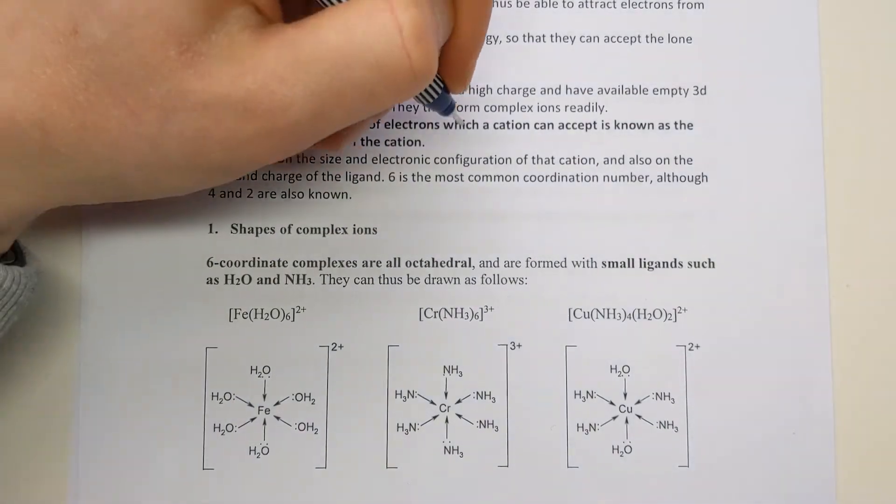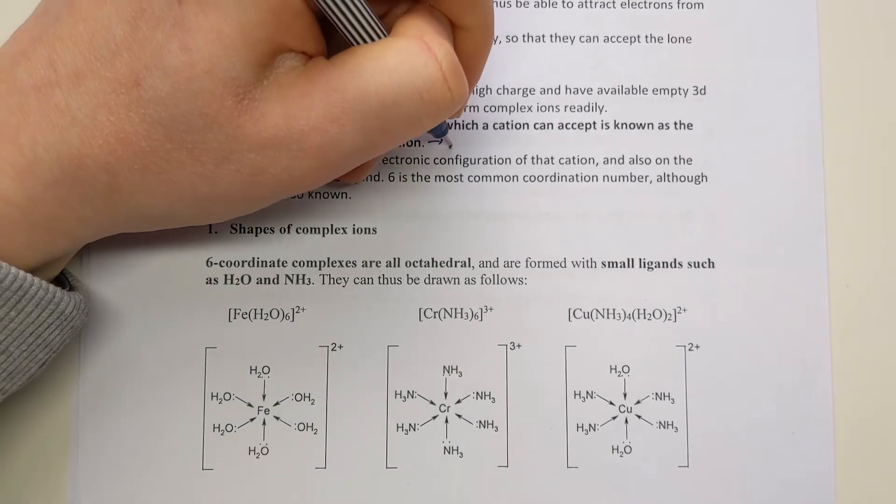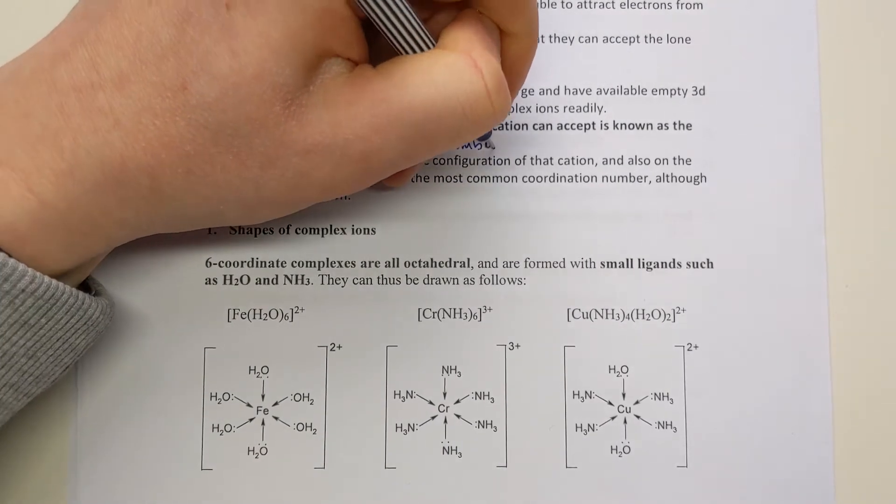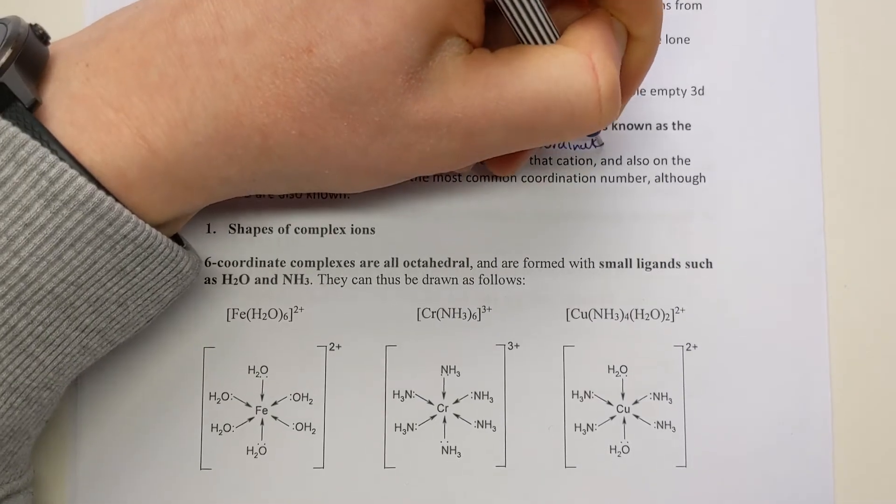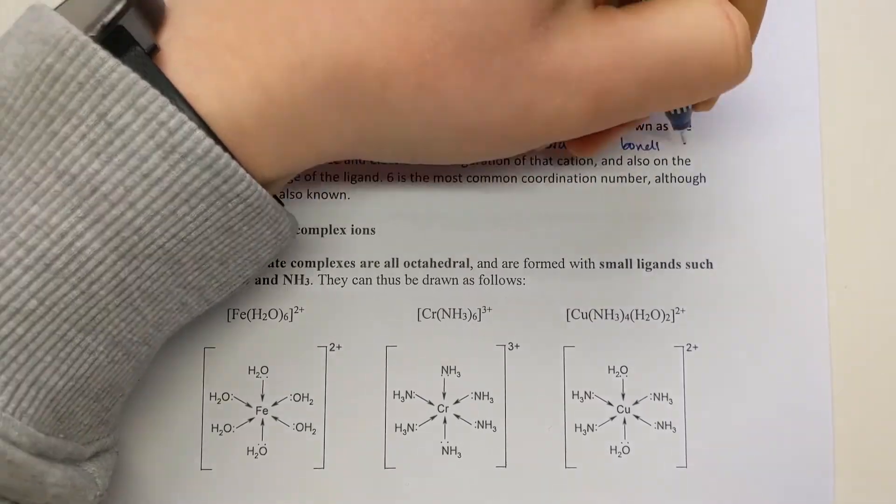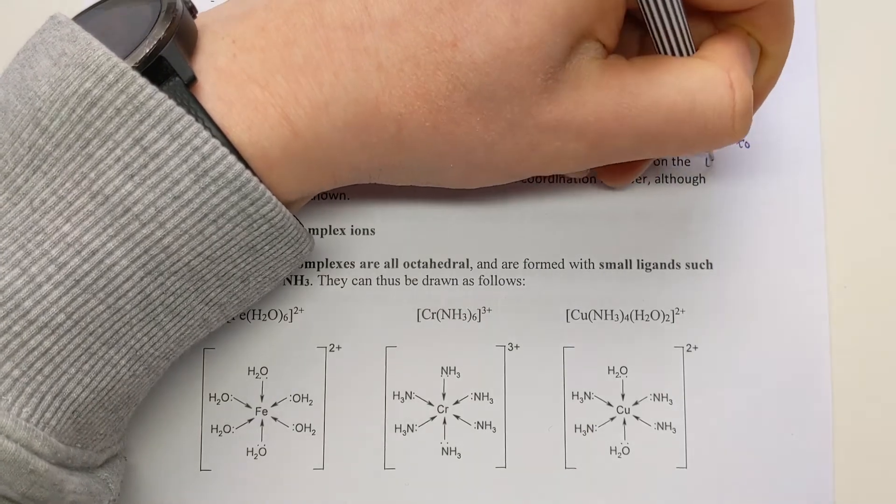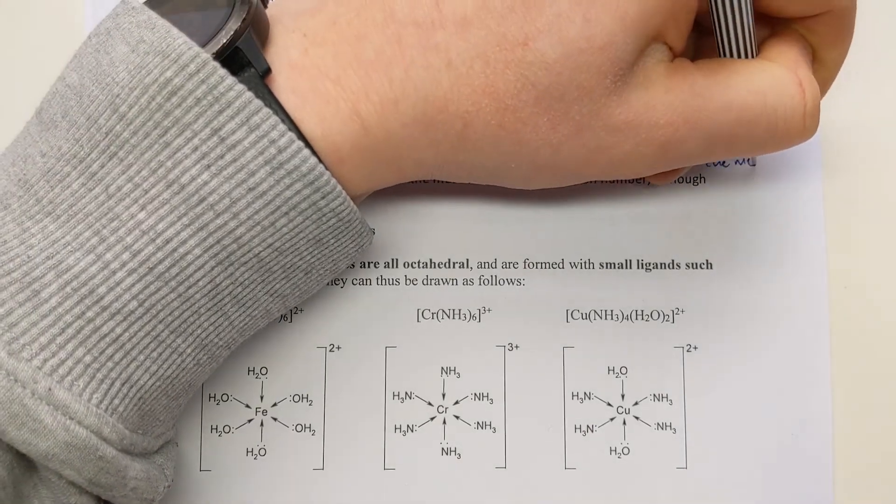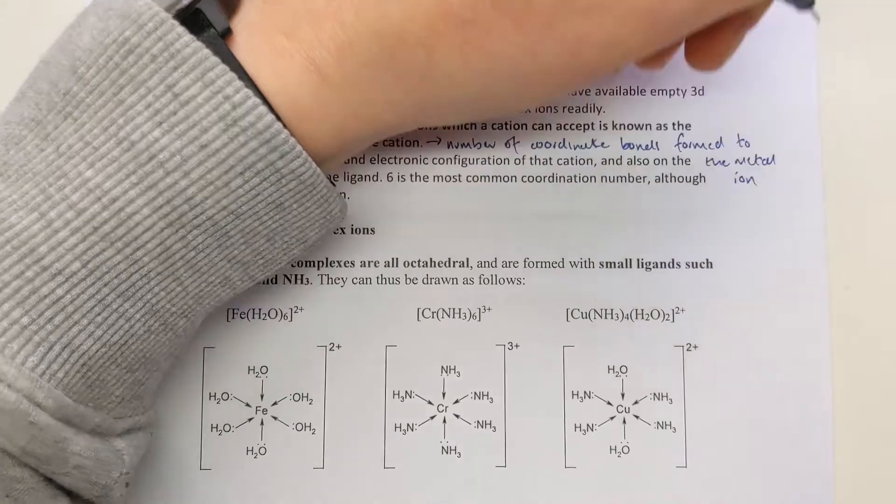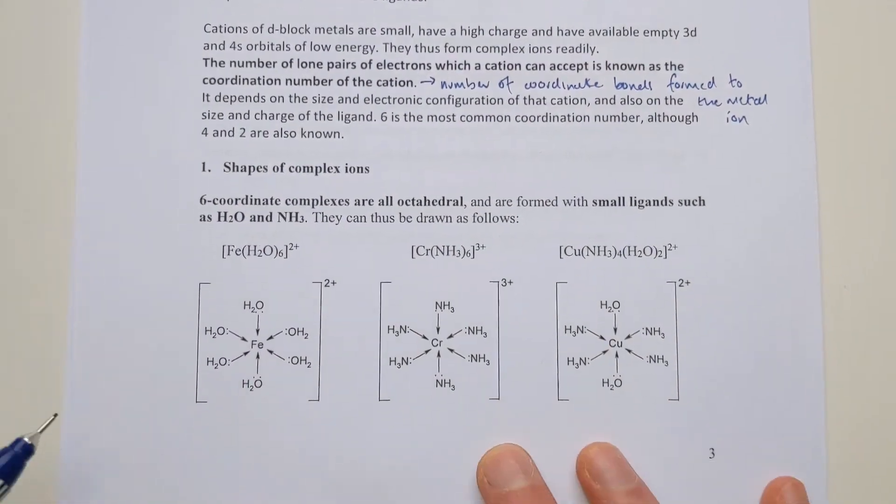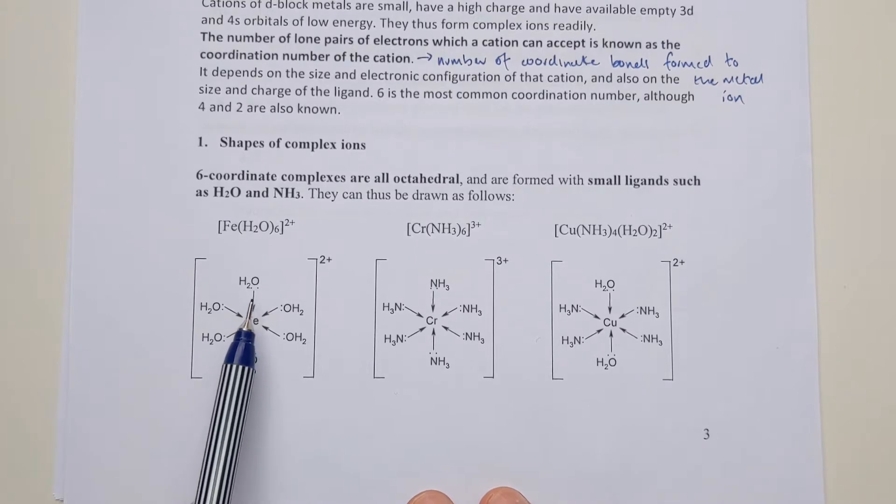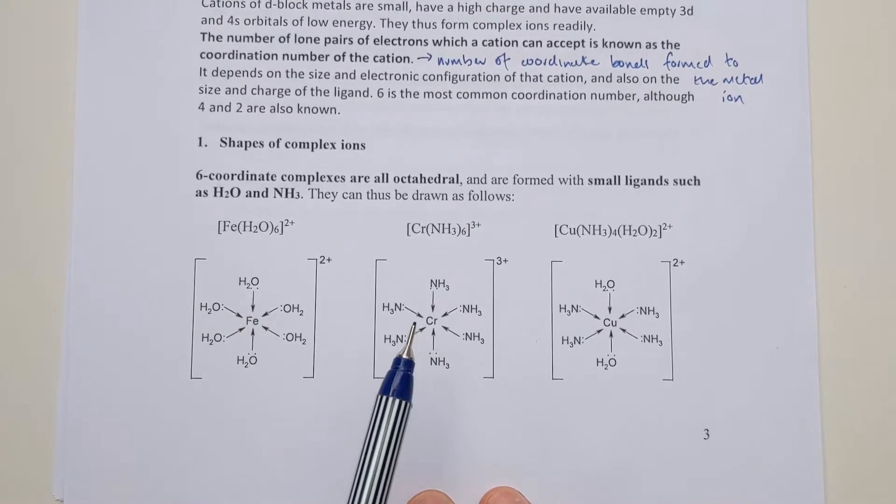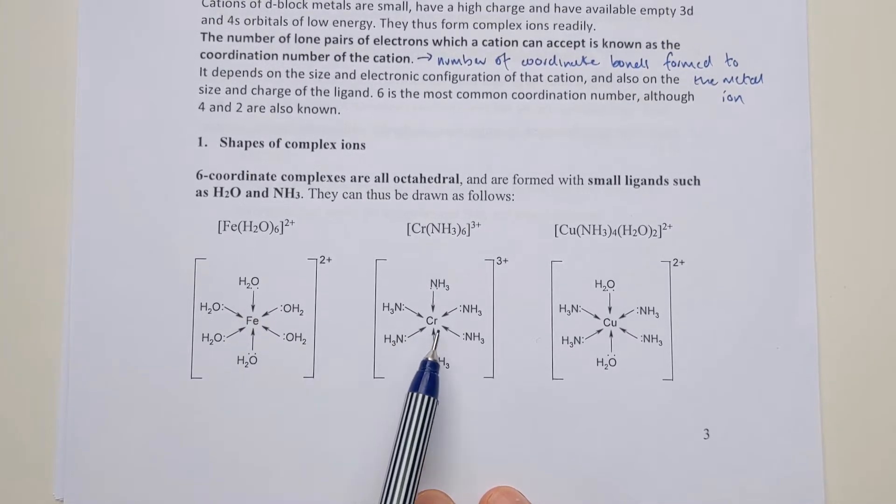Another way of putting that more simply is just that the number of coordinate bonds you form to the metal ion is the coordination number. In these examples on the bottom, you've got six coordinate bonds in each case, therefore the metal ions in each of these cases have a coordination number of six.